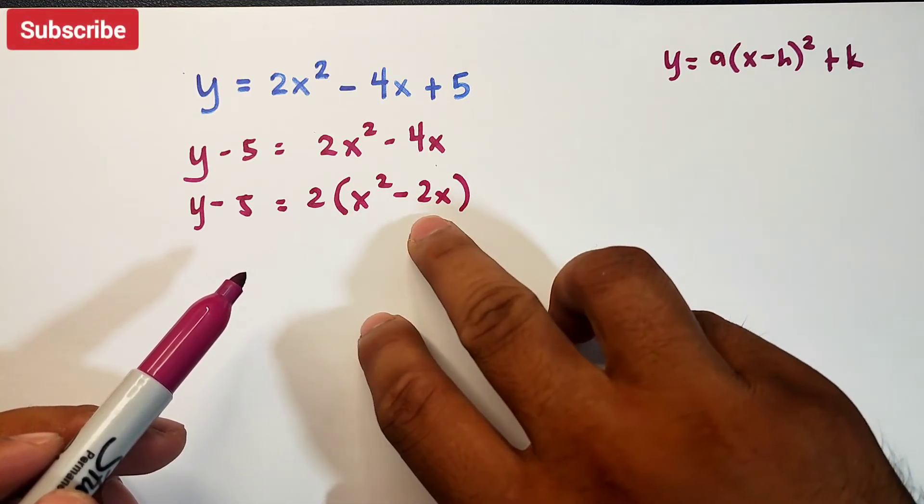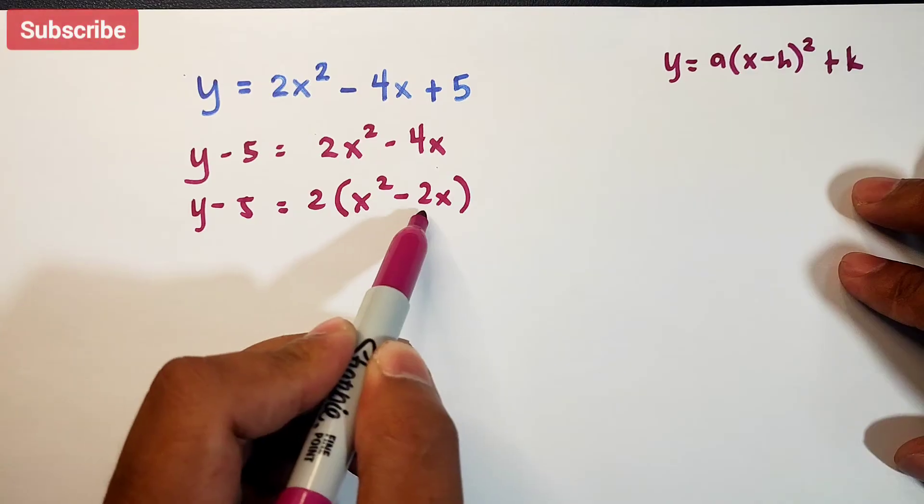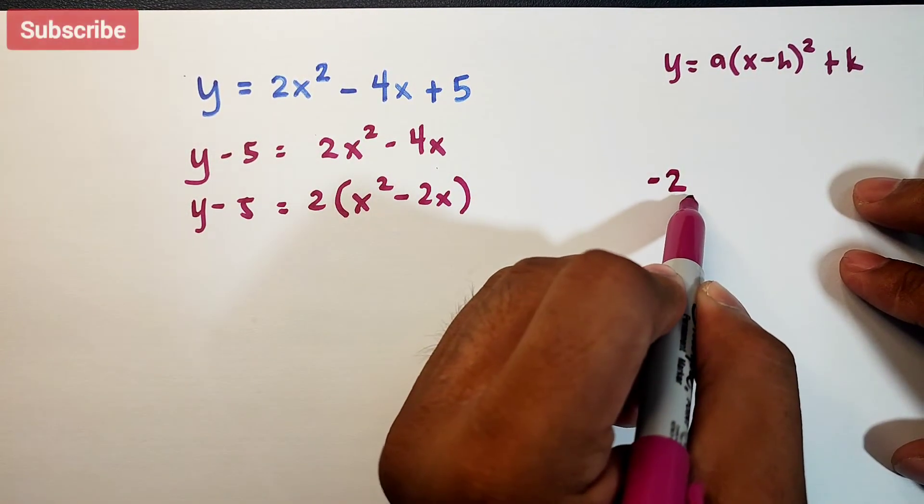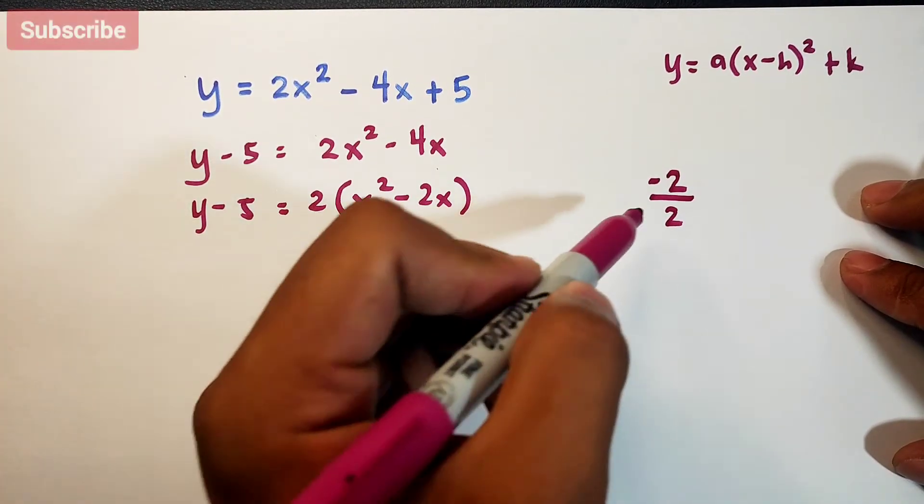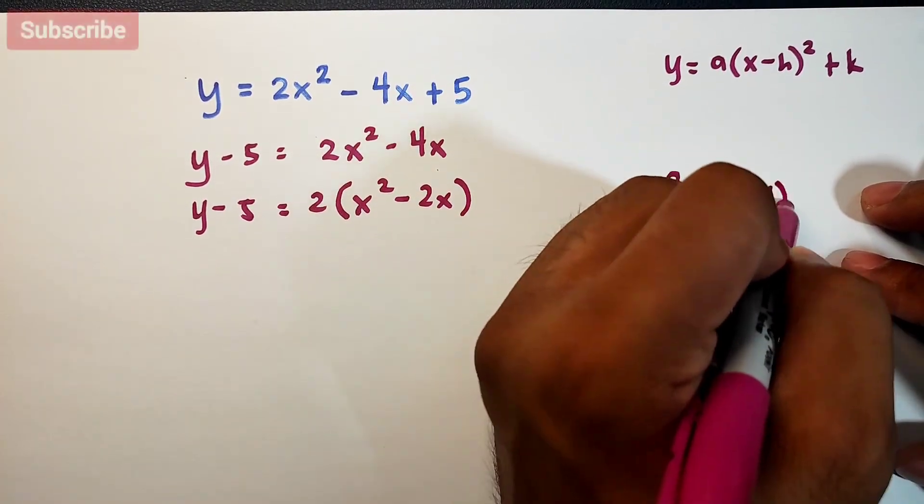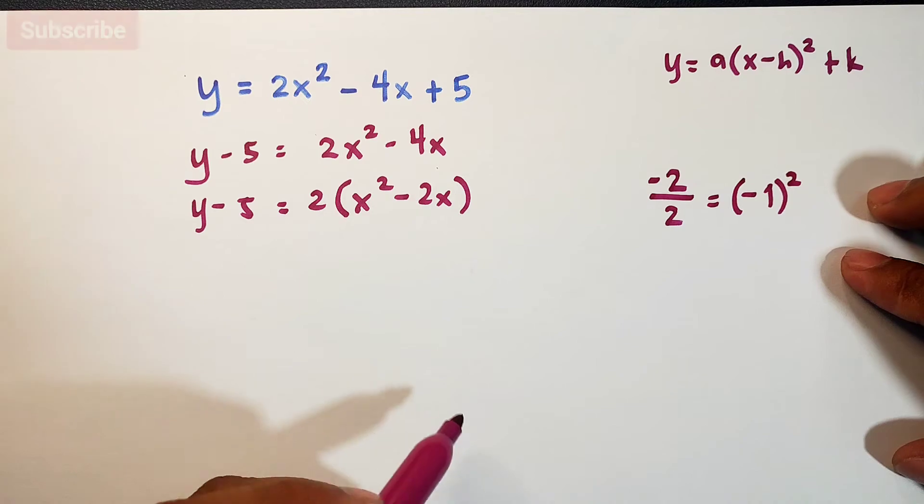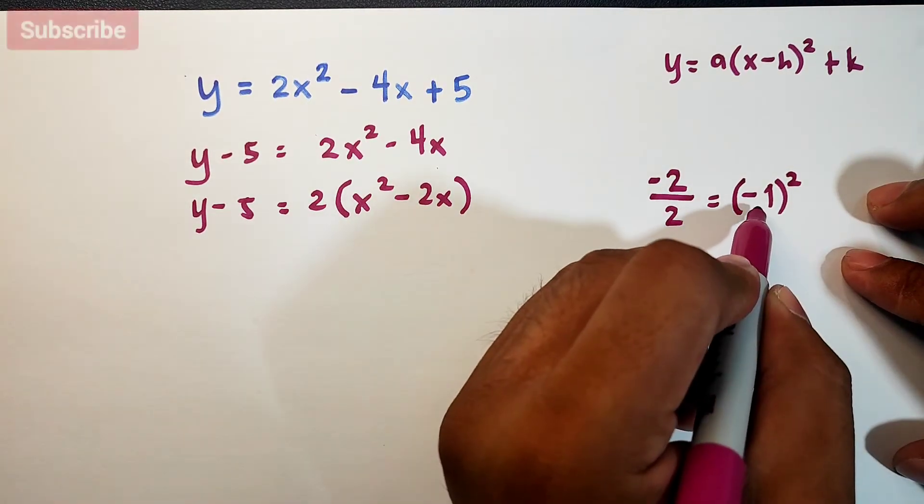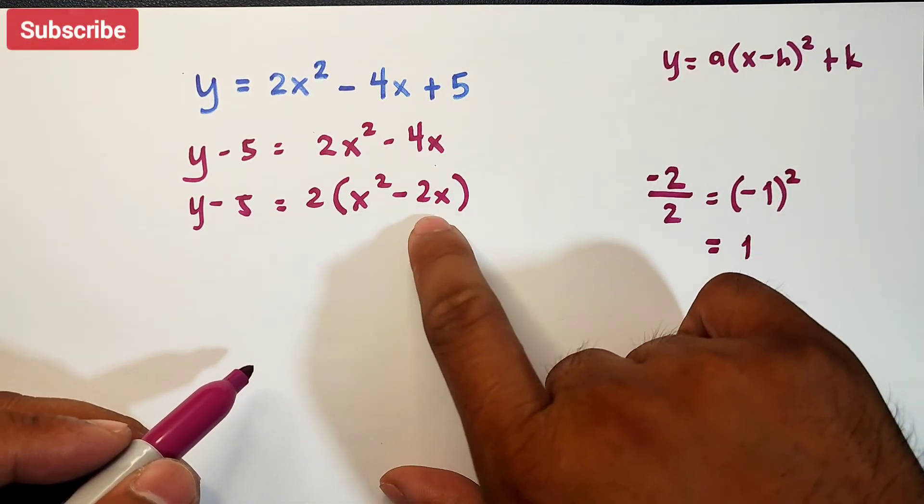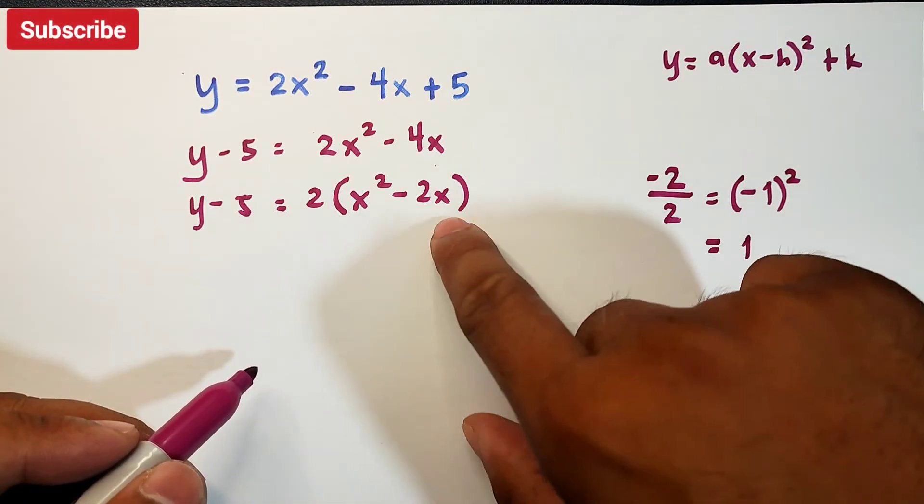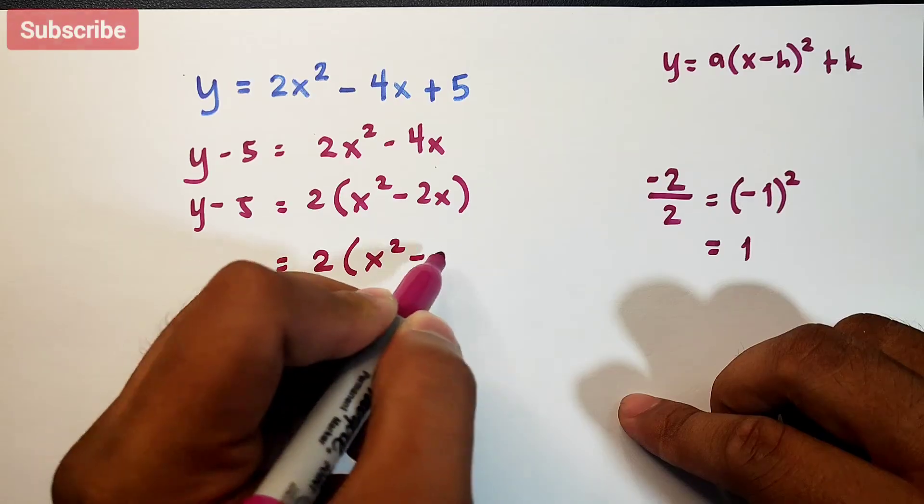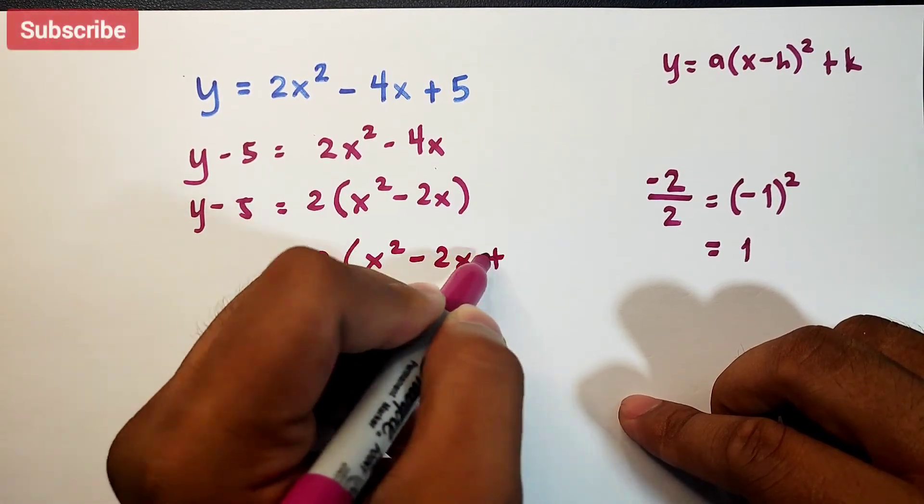Now we can perform completing the square on x squared minus 2x. Get the coefficient of x which is negative 2. Same process, divide by 2. The answer is negative 1. Square your answer. Negative 1 squared is simply 1.